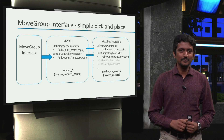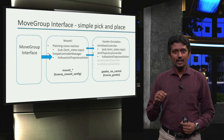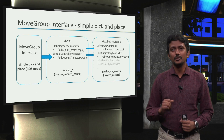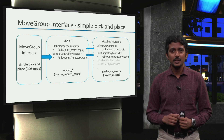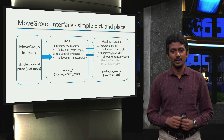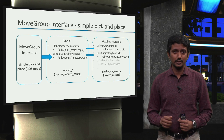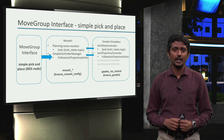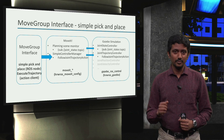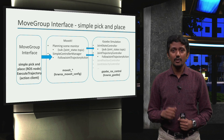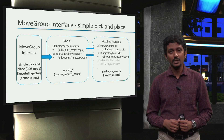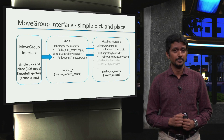Alright, let's use the APIs of the movegroup interface to set up our own simple pick and place software pipeline as a ROS node. For the communication with moveit, we will be using the execute trajectory action client. See you soon.